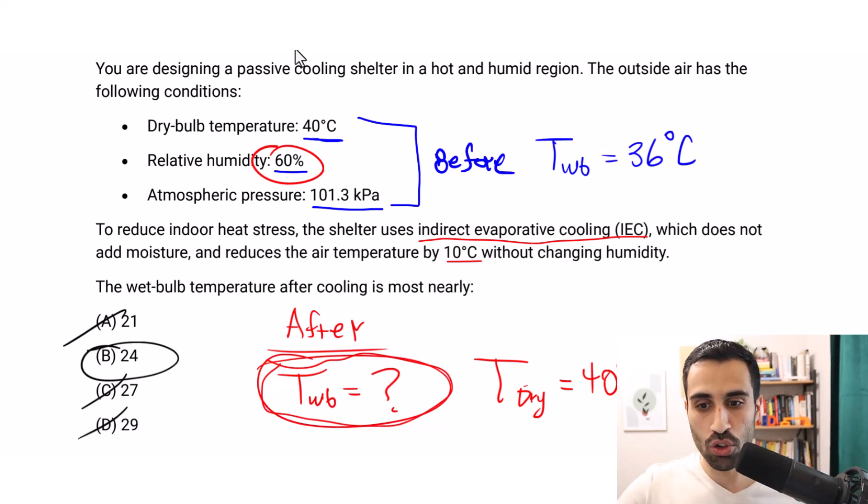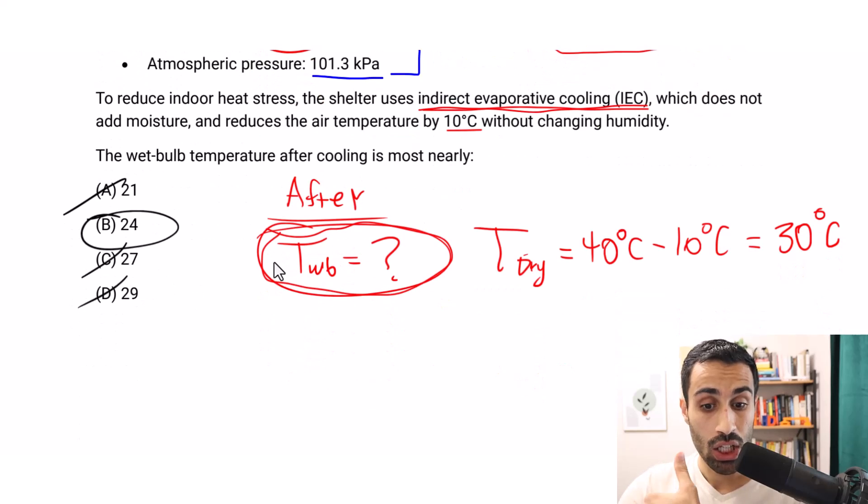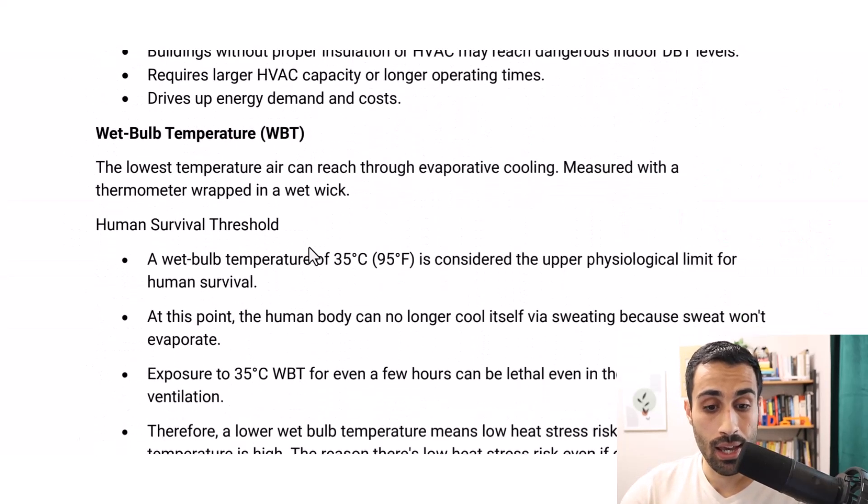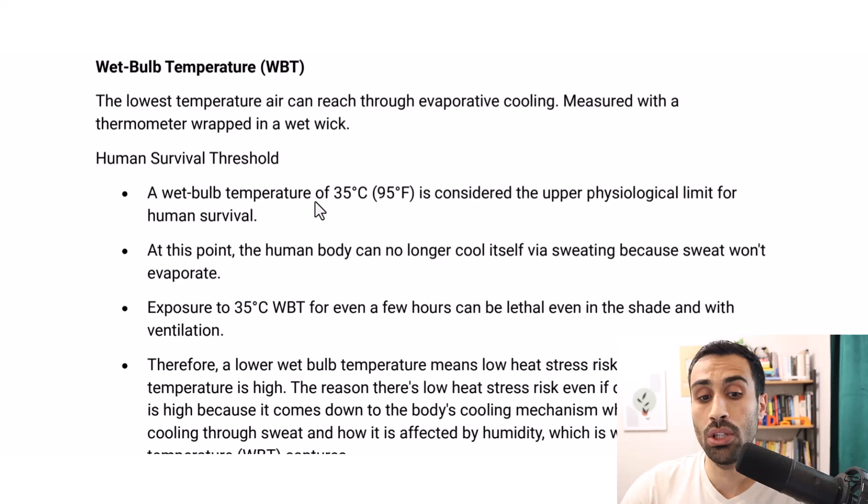And at the end, what did we do? We approximated this. It was outside the chart that we started with of a wet bulb temperature of 36°C to a temperature using our system of indirect evaporative cooling to 24°C. Using this system, based on this, we know the maximum is 35°C. So we're doing a good job here by reducing it that much.